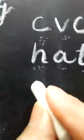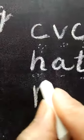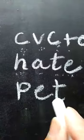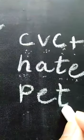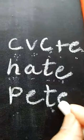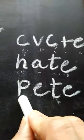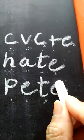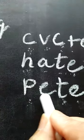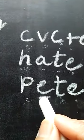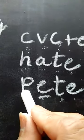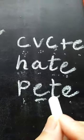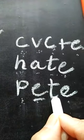Pet. Now we want to make a long vowel, so we add E again: P-E-T-E. Consonant, vowel, consonant, plus E. So the E says its name — P-E-T-E, Pete. Pete.